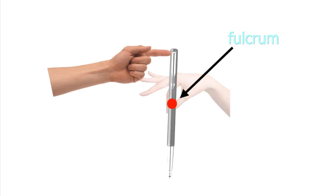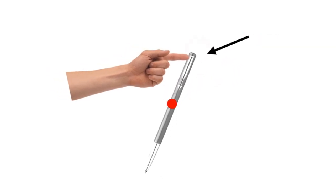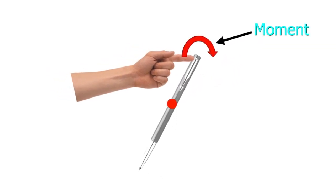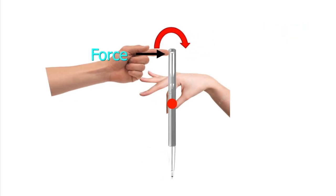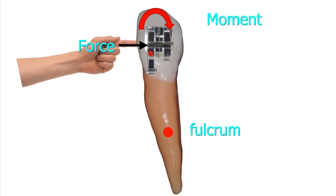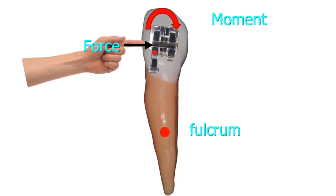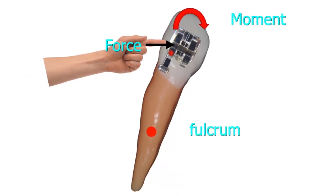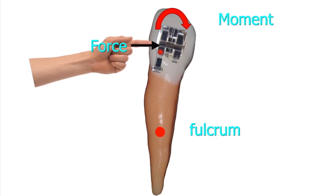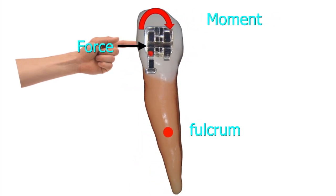This is the fulcrum, and once I apply the force, I have a tendency — a moment of force. So if I have a force like zero, I have no movement. But if I have a force applied far away from the fulcrum, I have a moment of force.